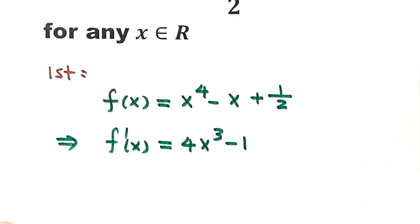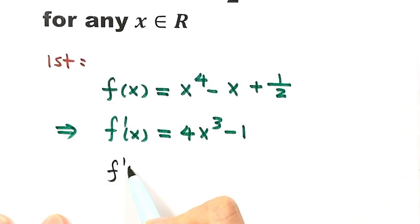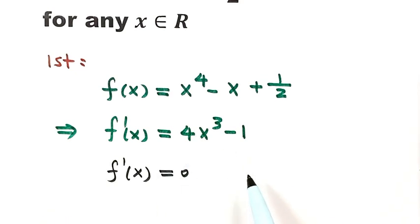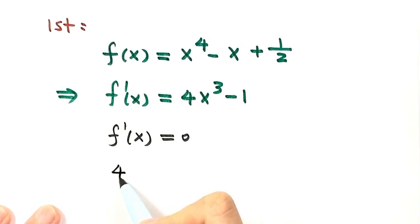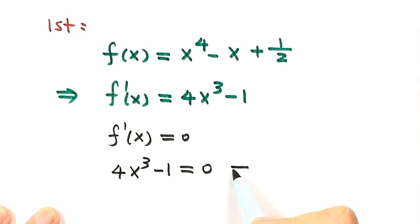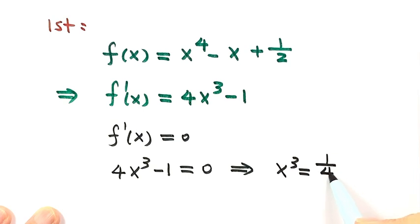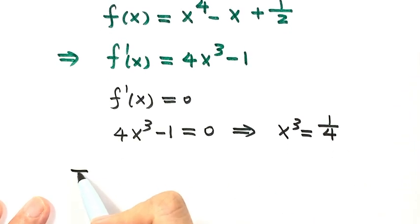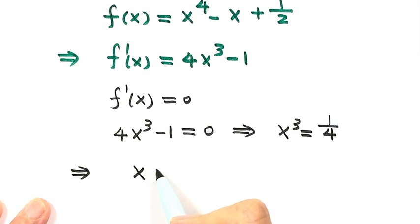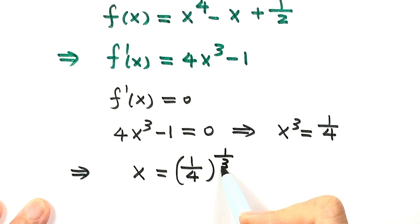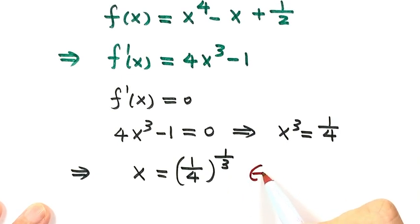Now let the first order derivative equal zero, because we want to find all critical points. Setting 4x cubed minus 1 equal to zero gives x cubed equals one fourth. Solving further, x equals one fourth to the power of one over three. This is the only real solution and the only critical point.